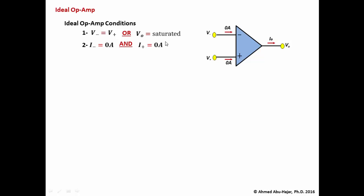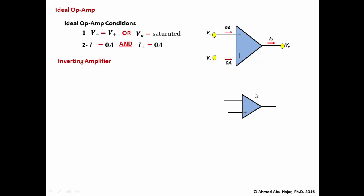When analyzing op-amp circuits using ideal op-amps, we must apply both conditions: the voltage at the non-inverting input equals the voltage at the inverting input, and the current at both inputs equals zero. These requirements are extremely important. Now we will look at the most fundamental block of op-amp circuits — the inverting amplifier.